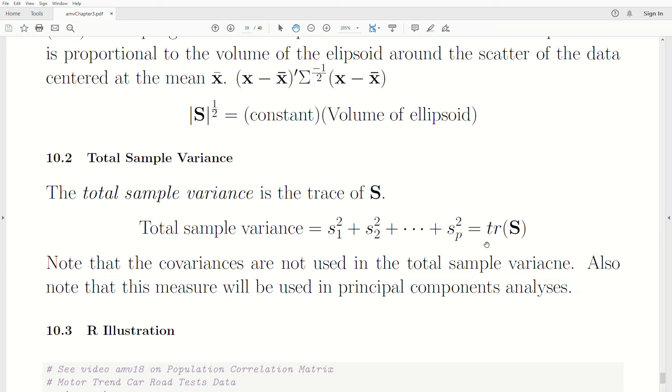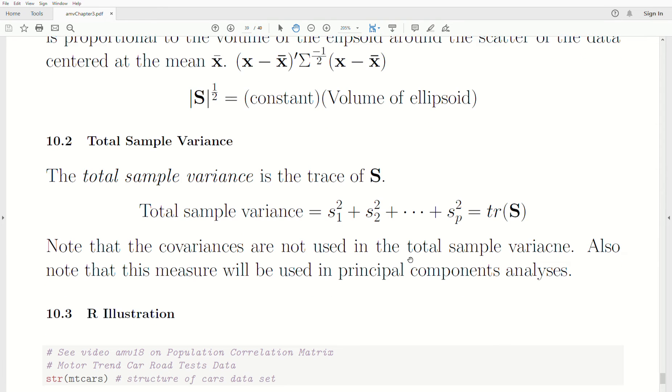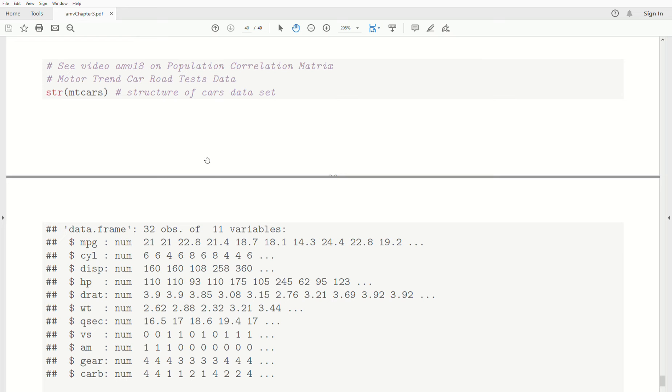But it does a little bit. So, the more spread out our data are, the bigger the total sample variance will be. So, it is a number that sort of describes it. And it turns out that this measure will be used when we look at principal components analysis, the total sample variance.